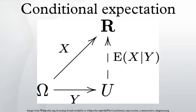So instead, one only defines the conditional expectation with respect to a sigma algebra or a random variable. Conditional expectation with respect to a random variable: if Y is a discrete random variable with range, then we can define the function. Sometimes this function is called the conditional expectation of X with respect to Y. In fact, according to the modern definition, it is this function that is called the conditional expectation of X with respect to Y, so that we have a random variable.